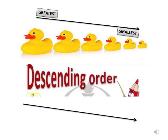See these ducks — they are arranged from the greatest to the smallest duck. So they are said to be in descending order.